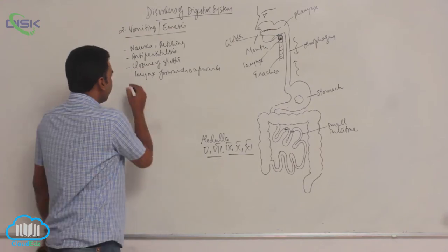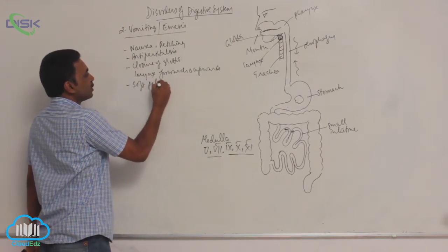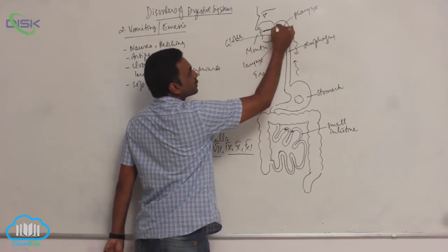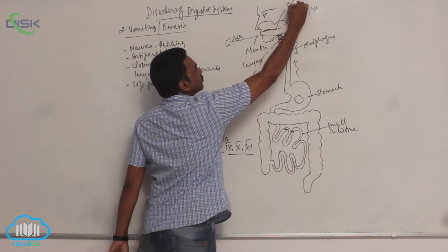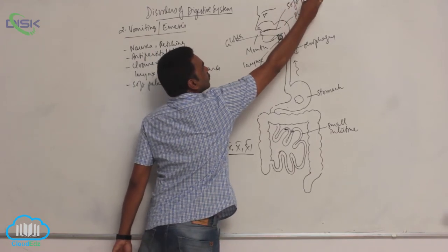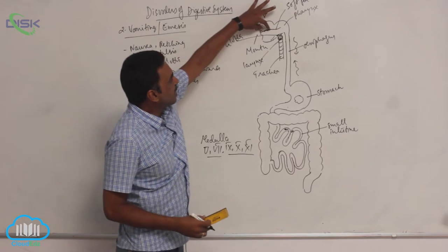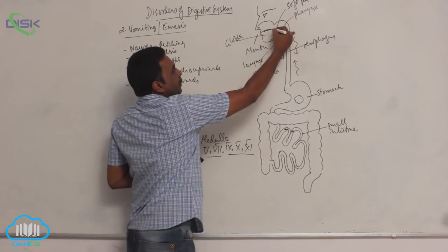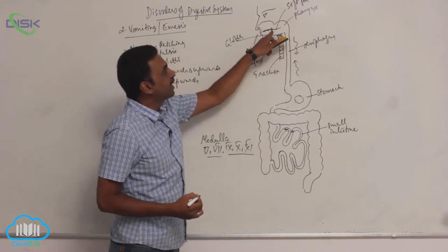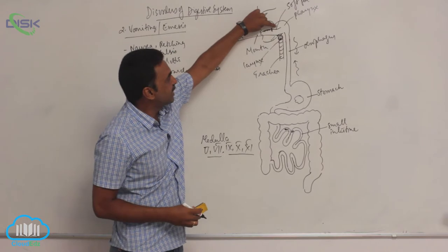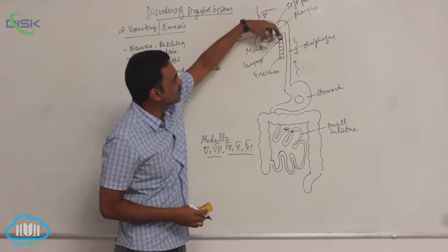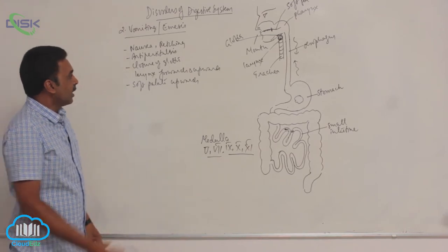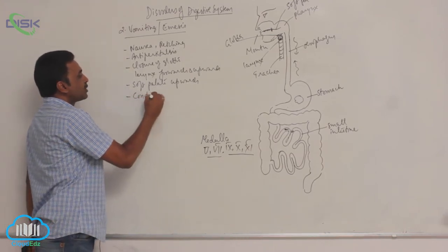The soft palate moves upwards. The hard palate separates the buccal cavity from the nasal cavity, and beyond that line the soft palate separates the nasopharynx from the oropharynx. This soft palate is pulled upwards during vomiting. There is also contraction of the abdominal muscles.